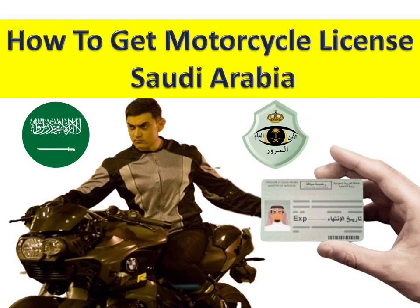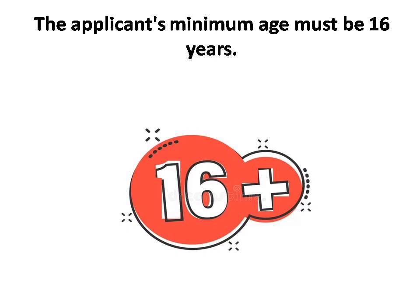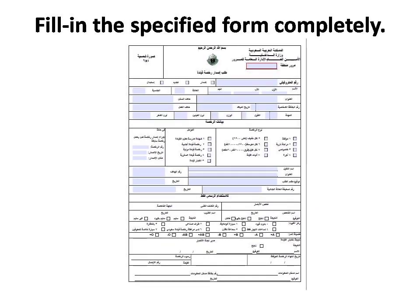First, we will check as per the Murur rules. The driving license applicant should be greater than 16 years of age — the applicant should be greater than 16.